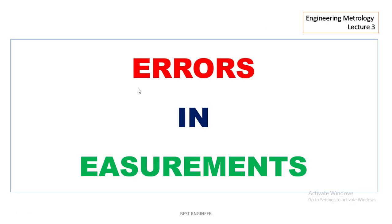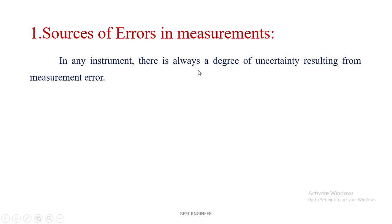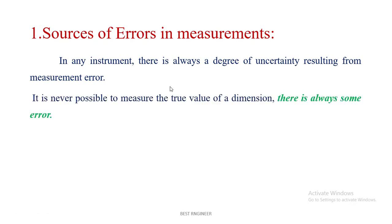Hi guys, in this video let me see the errors in measurements, sources of error in measurements. In any instrument, there is always a degree of uncertainty resulting from measurement error. It is never possible to measure the true value of dimensions; there is always some error.